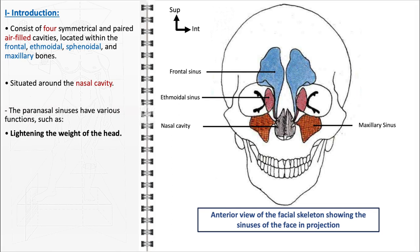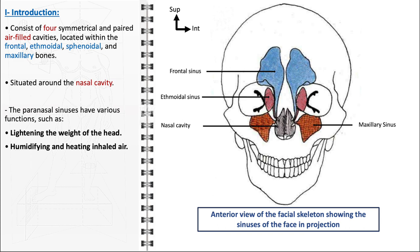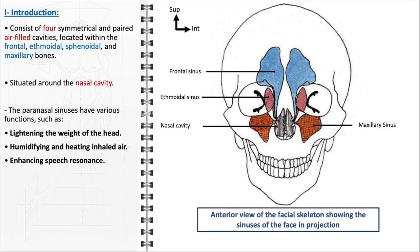One of their primary functions is lightening the weight of the head, which is a crucial factor in human biomechanics and comfort. The air-filled nature of these cavities significantly reduces the overall density and weight of the skull, facilitating easier movement and reducing strain on the neck and spine. The paranasal sinuses also contribute to the humidification and heating of inhaled air, ensuring optimal temperature and moisture levels. Additionally, they act as resonating chambers, enhancing speech resonance and contributing to the unique timbre of an individual's voice.